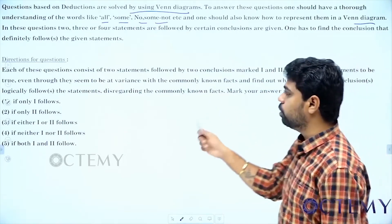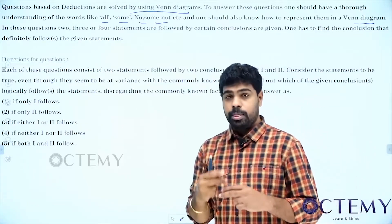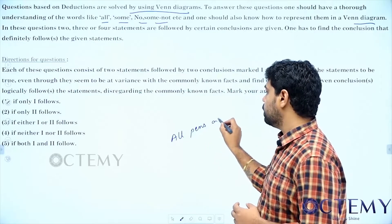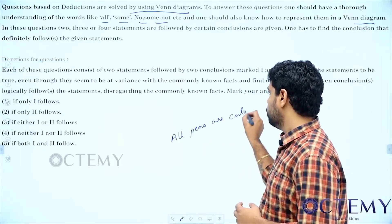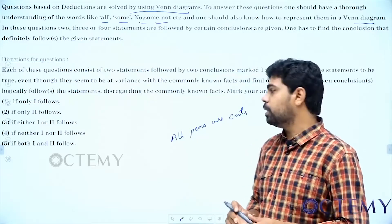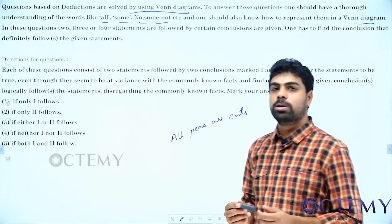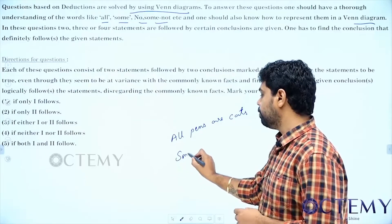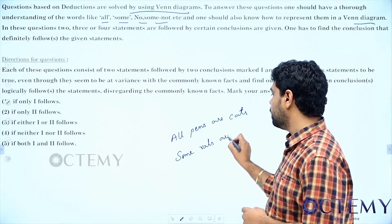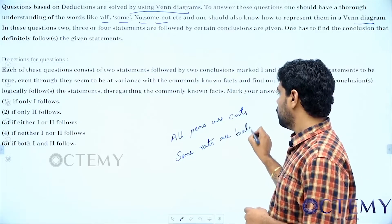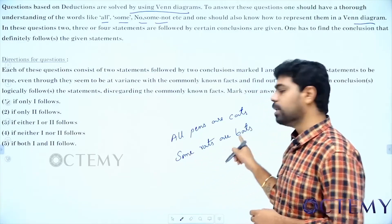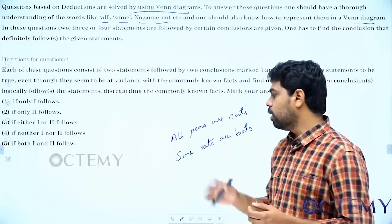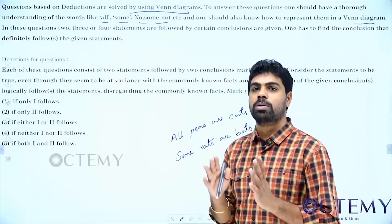Consider the following statements to be true. When you see in syllogism — for example, 'all pens are cats' — you should not question that. You should not say 'how can pens become cats?' Whatever is given in the question, you should think that is true. If they say 'some rats are bats,' you should assume that some rats are bats. Do not go for the scientific or practical view.